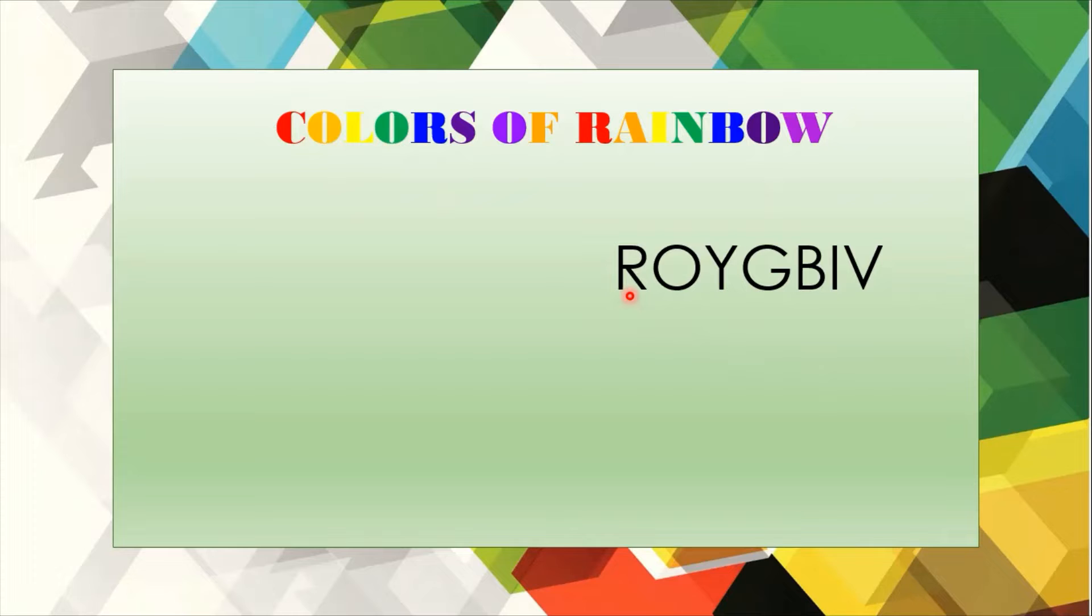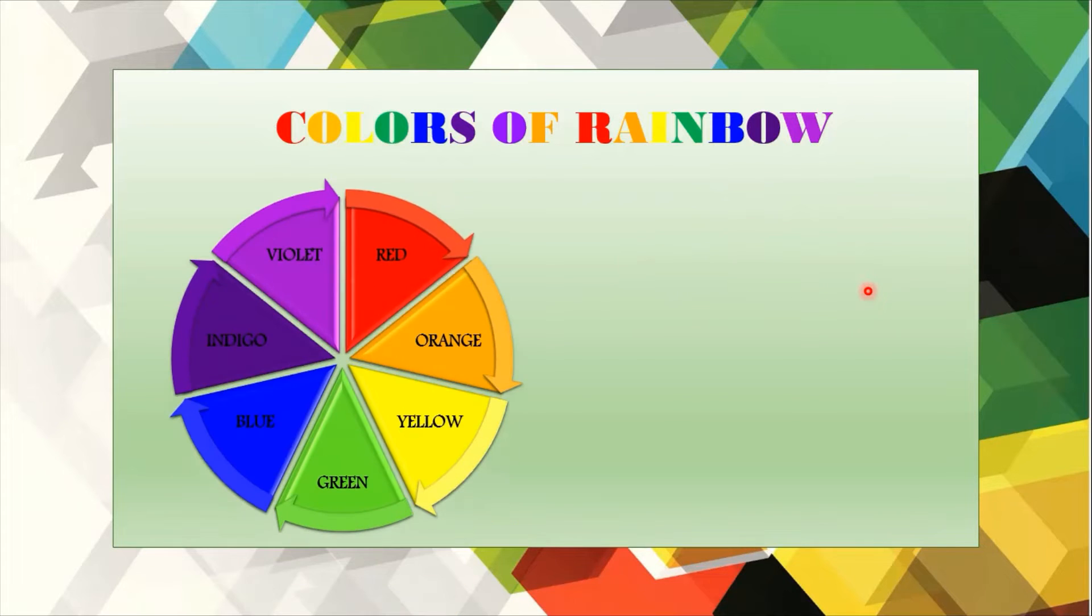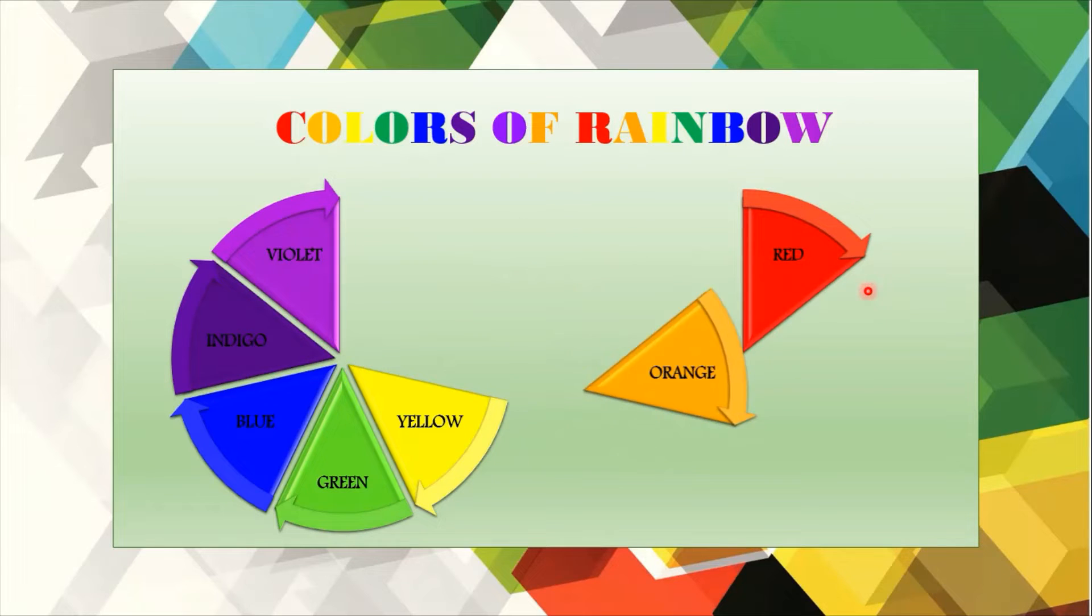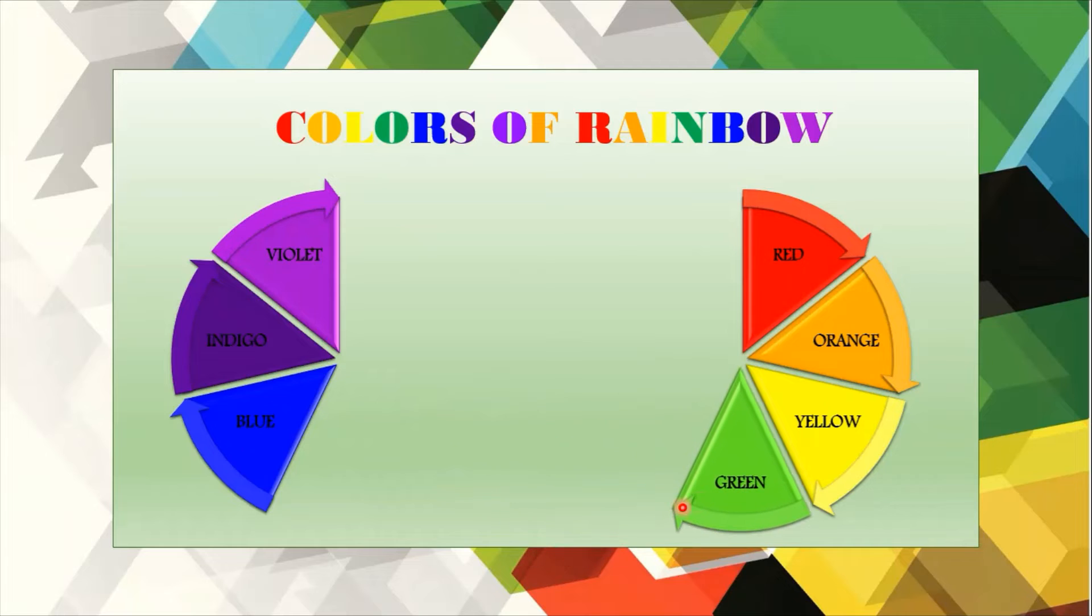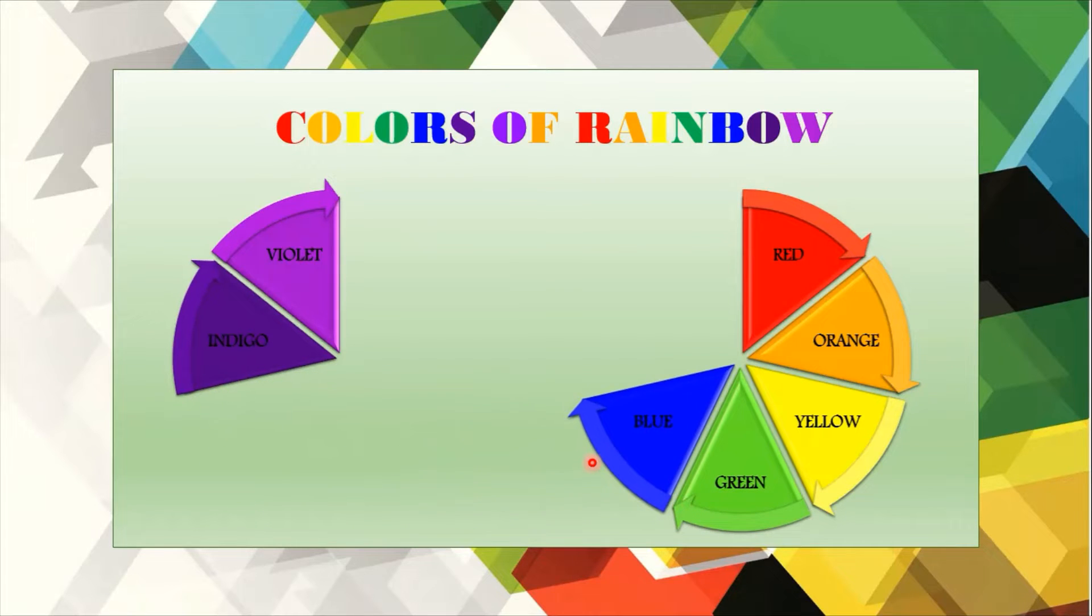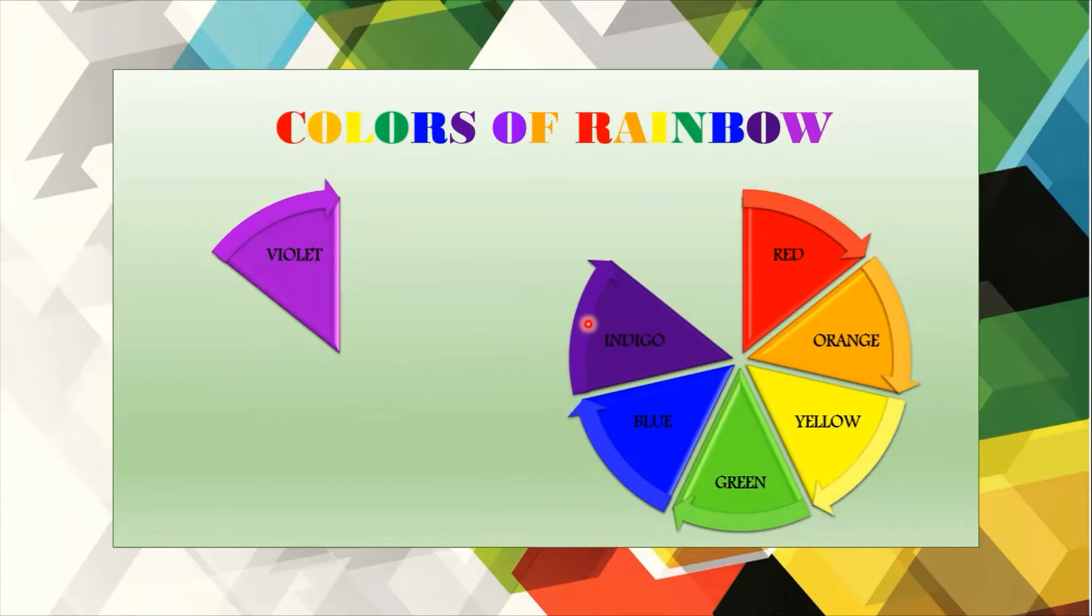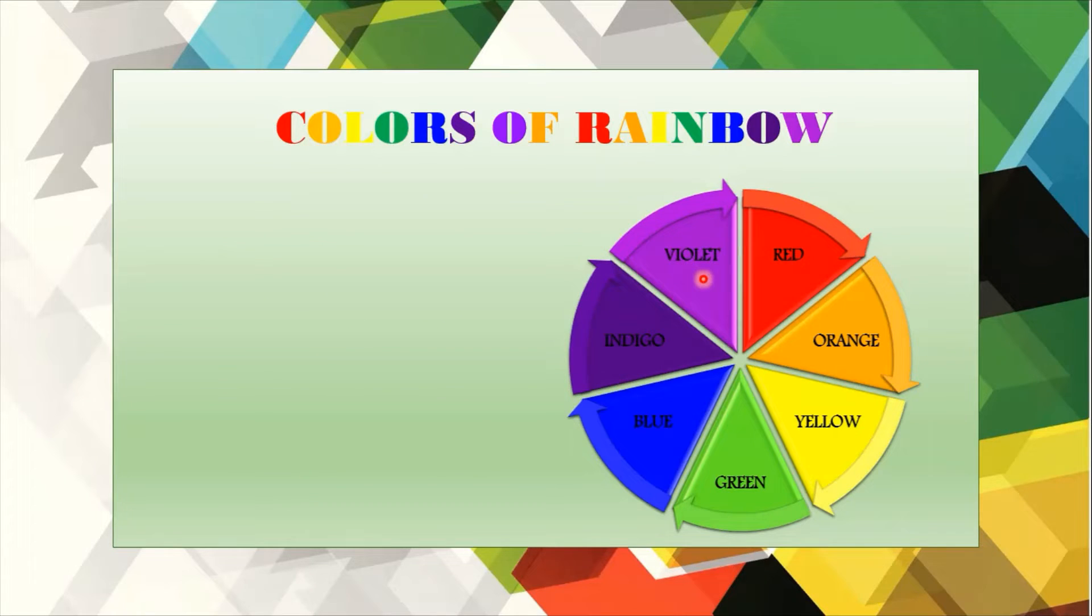First we will learn about the colors present in a spectrum. Spectrum is also known as colors of the rainbow. Generally a rainbow has seven colors. These colors can be denoted by ROYGBIV, which stands for red, orange, yellow, green, blue, indigo, violet.